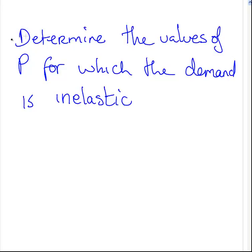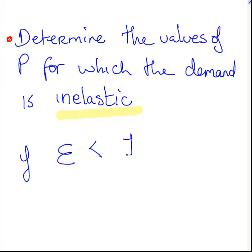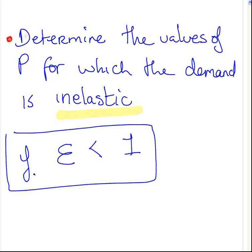The second question is: find the values of P for which demand is inelastic. Demand is inelastic if this term — the absolute value of the elasticity — is less than 1. So if 5P squared minus 18 over P squared plus 18 is less than 1, let's see what that means.